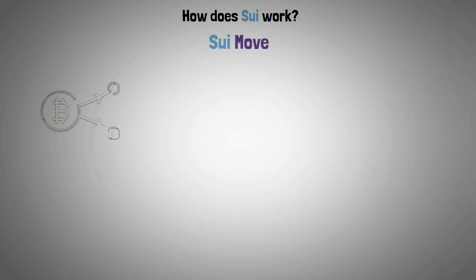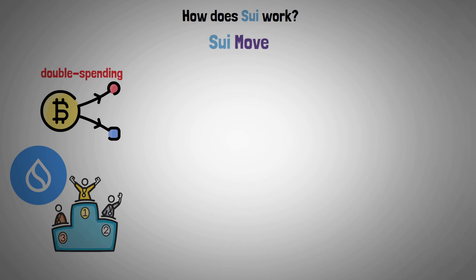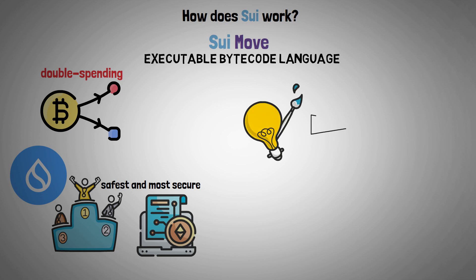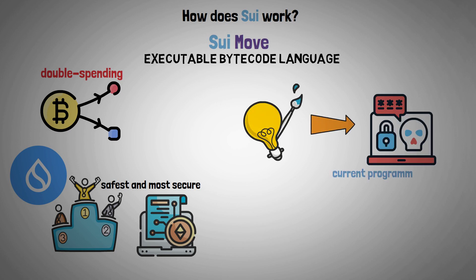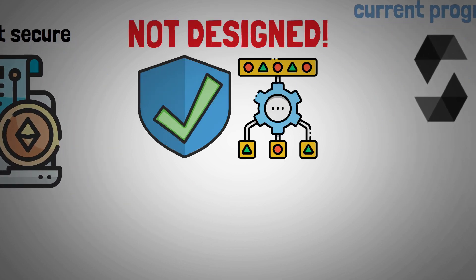To prevent double spending and help SUI become one of the safest and most secure smart contract platforms, SUI's Move is an executable bytecode language. It was created to address some flaws of current programming languages like Solidity, which weren't designed to securely support blockchain asset representations.